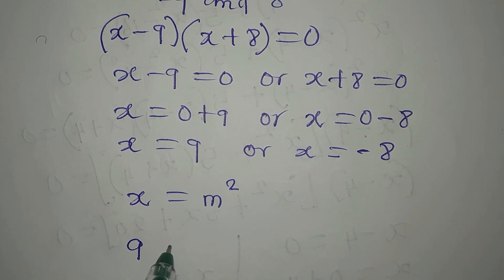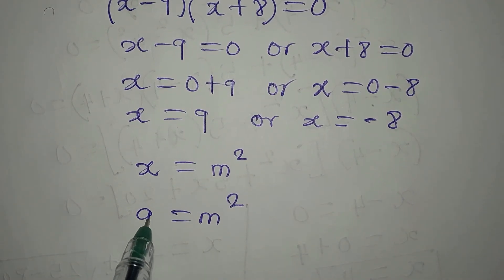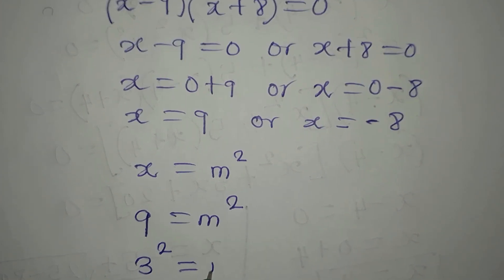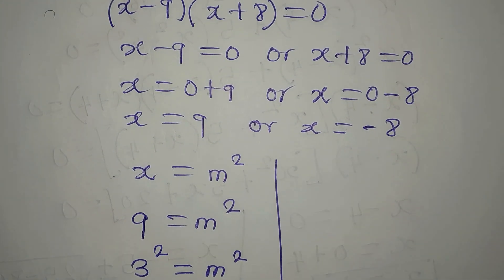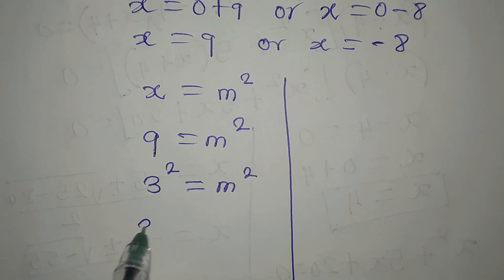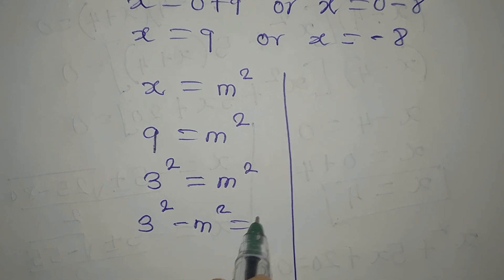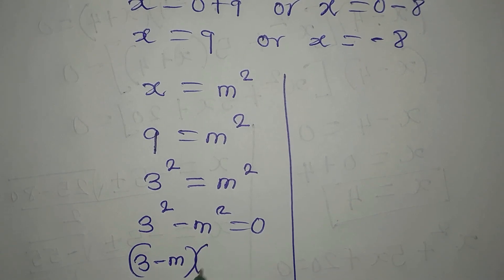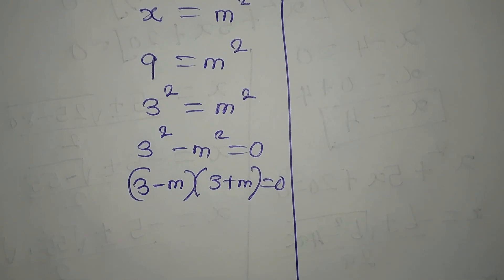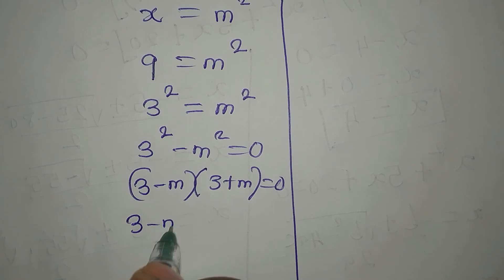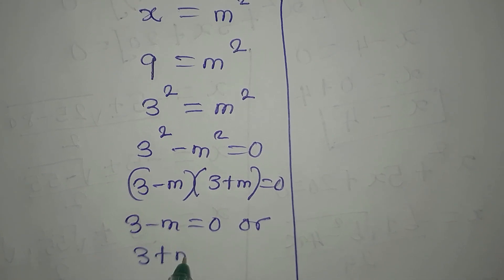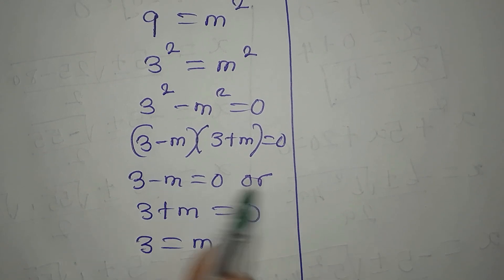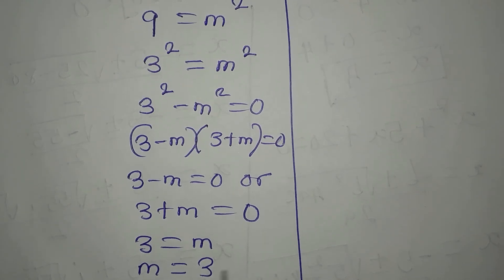Remember, we said that x equals m squared. So putting in x equals 9, we have m squared equals 9, which is 3 squared equals m squared. Bringing this to the left, we have 3 squared minus m squared equals 0. Applying the difference of two squares, we get 3 minus m times 3 plus m equals 0. So either 3 minus m equals 0, giving us m equals 3. This is one of the solutions.